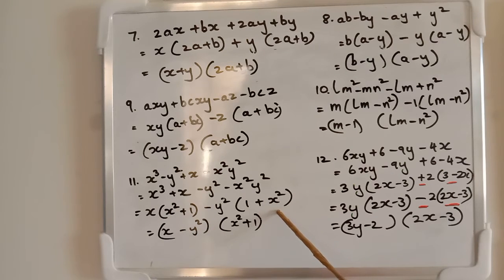Whatever you add, either way it is the same thing. x² + 1 is the same as 1 + x². So we will keep (x - y²)(x² + 1).